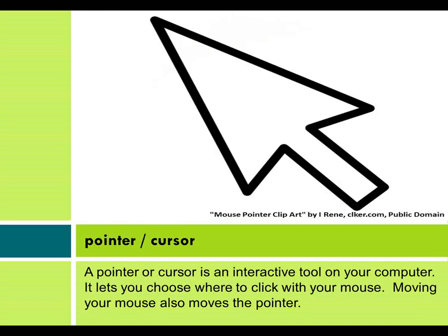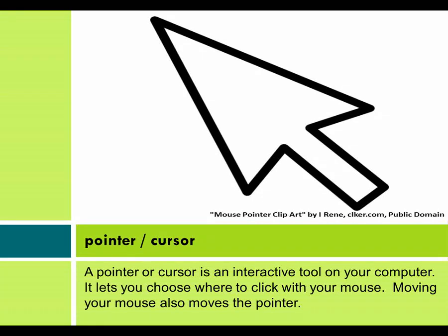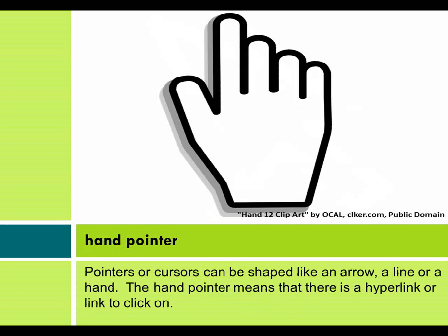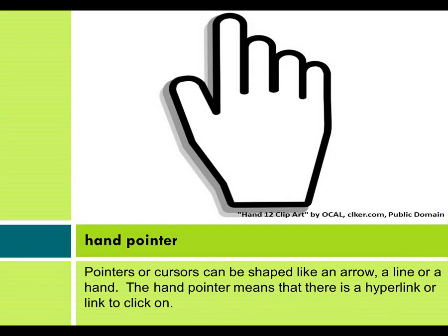Pointer or cursor. A pointer or cursor is an interactive tool on your computer. It lets you choose where to click with your mouse. Moving your mouse also moves the pointer. Hand pointer. Pointers or cursors can be shaped like an arrow, a line, or a hand. The hand pointer means that there is a hyperlink or link to click on.